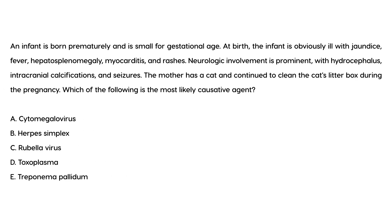Clinical vignette one: An infant is born prematurely and is small for gestational age. At birth, the infant is obviously ill with jaundice, fever, hepatosplenomegaly, myocarditis, and rashes. Neurologic involvement is prominent with hydrocephalus, intracranial calcifications, and seizures. The mother has a cat and continued to clean the litter box during pregnancy. This is a classic vignette describing fetal infection with toxoplasmosis.